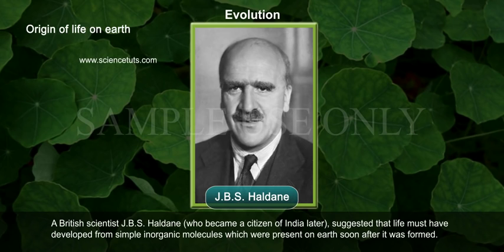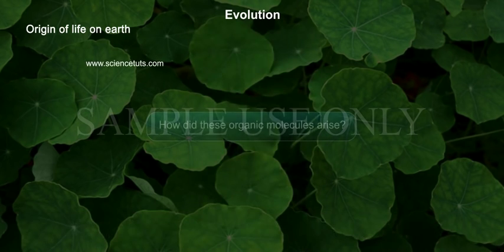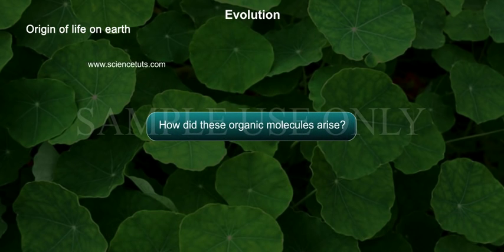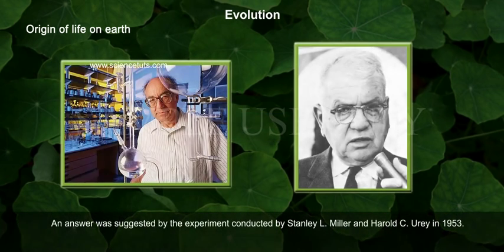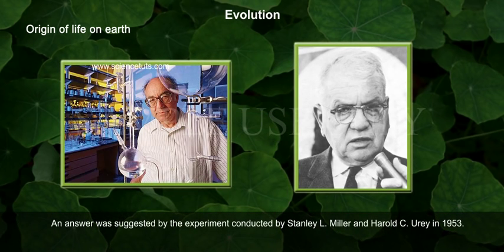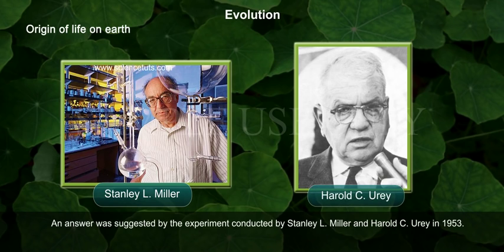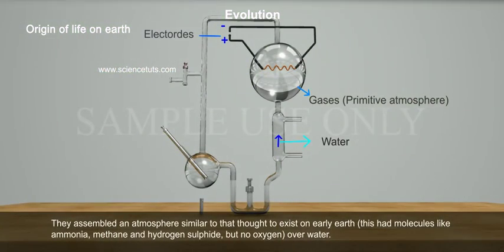A British scientist, J.B.S. Haldane, who later became a citizen of India, suggested that life must have developed from simple inorganic molecules present on early earth. An answer to how organic molecules arose was suggested by the experiment conducted by Stanley L. Miller and Harold C. Urey in 1953.